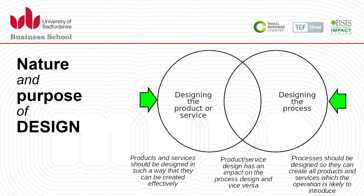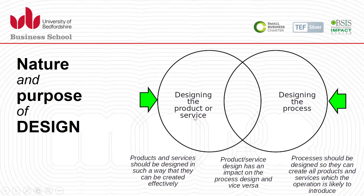Looking at this graphical illustration, we can see product or service design on one circle and designing the processes on the right side in a second circle. Products and services should be designed so they can be created effectively. Processes should be designed so they can create all products and services that the operation is likely to introduce. The common ground shows the overlap where each has an impact on the other.